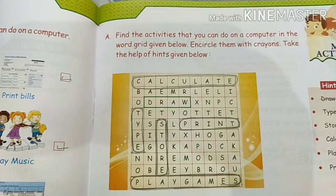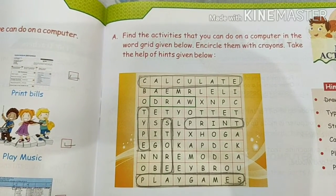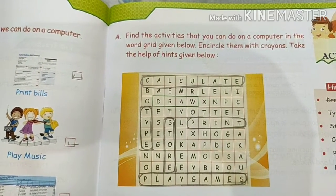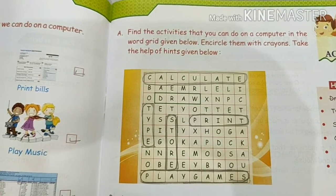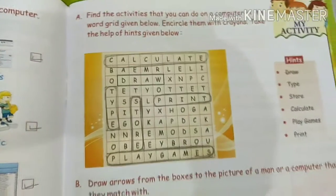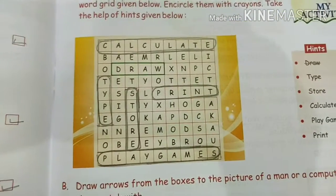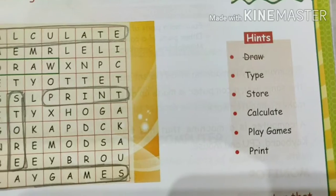Then we come to the next exercise. Find the activities that you can do on a computer in the word grid given below. Encircle them with crayons. Take the help of the hint given below. Here is the hint box: Draw, Type, Store, Calculate, Play Games, Print. You have to find these words.